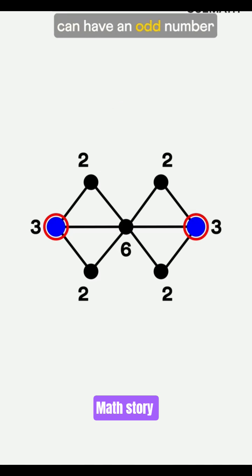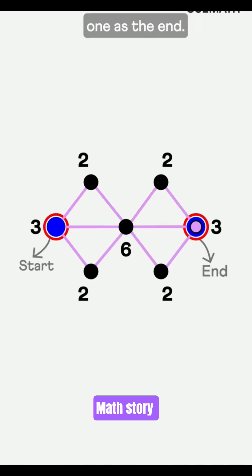So at most, two points can have an odd number of connections. One is the start, one is the end.